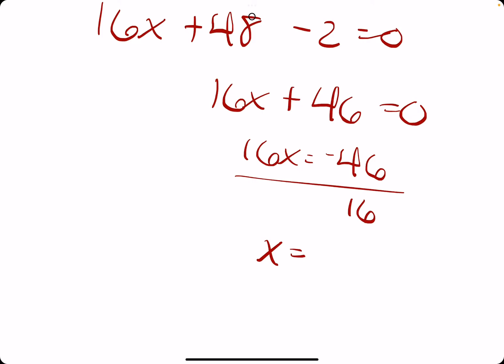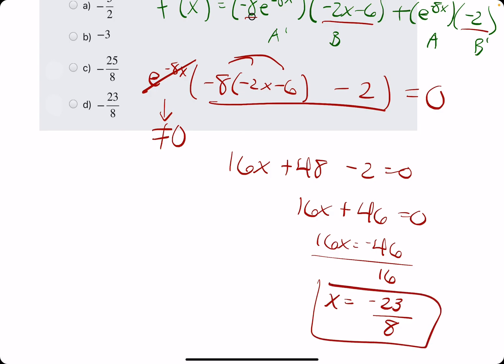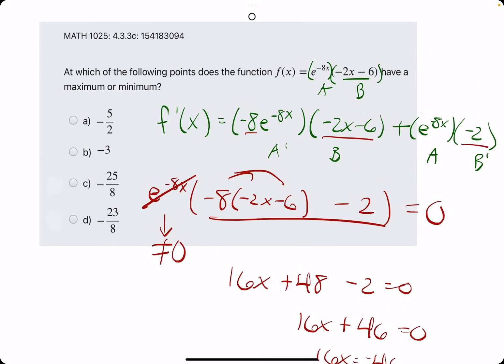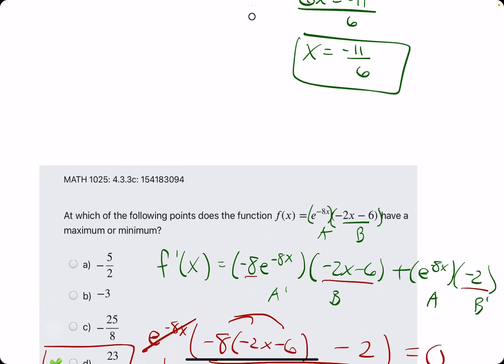16x equals negative 46. We divide by 16, looking for common factors. Dividing each by 2, we get negative 23 over 8. That looks like option D, so D is our answer.